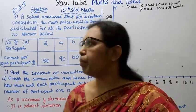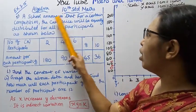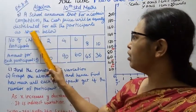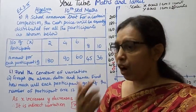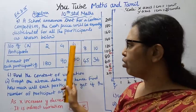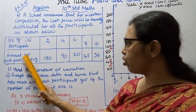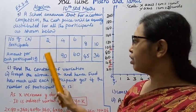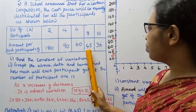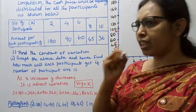Hello students, welcome to Max and Tramil channel. This is a tense channel Max graph algebra exercise 3.15. A school announced that for a certain competition, the cash prize will be equally distributed among all the participants. The number of participants is x and the amount for each participant is y. Find the constant of variation.